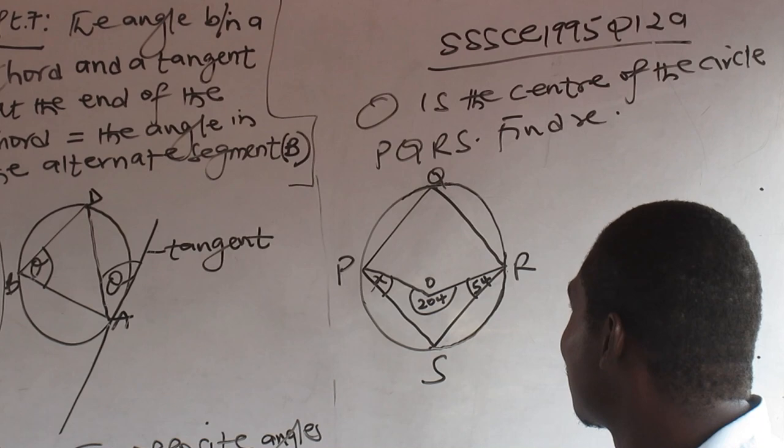O is the center of the circle, PQRS. 1X, go ahead, let's slide in.